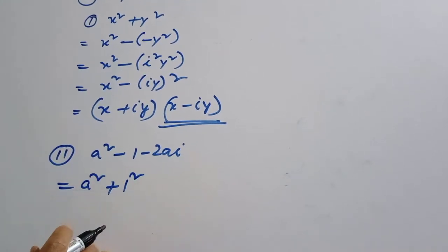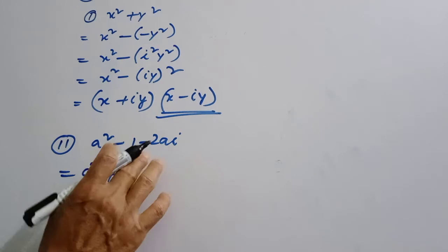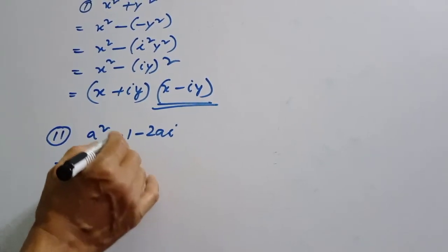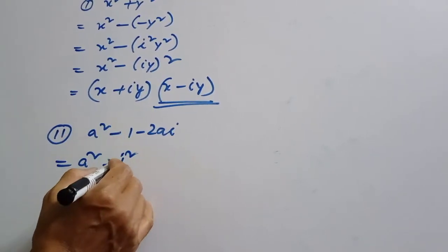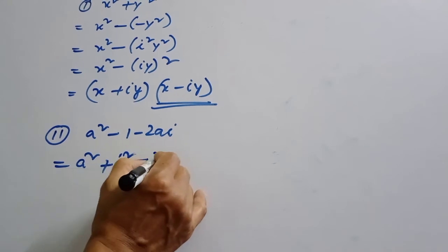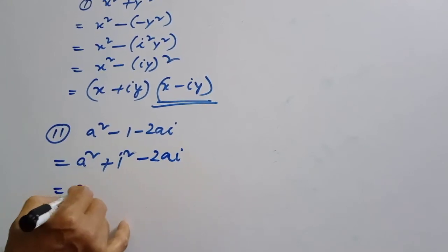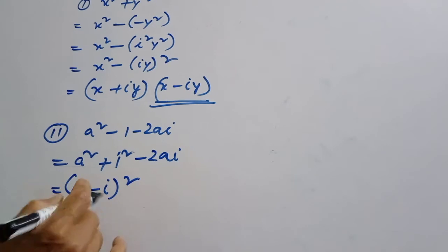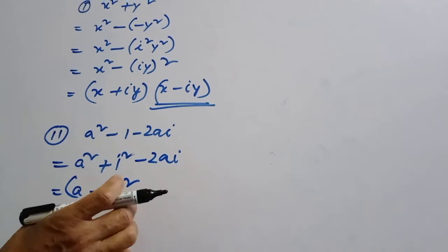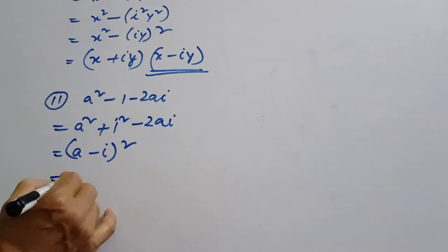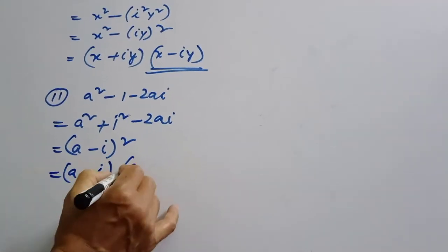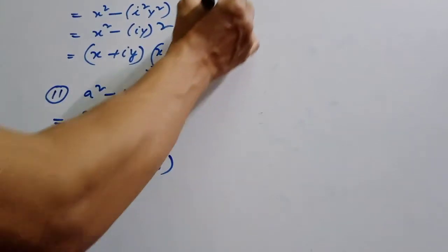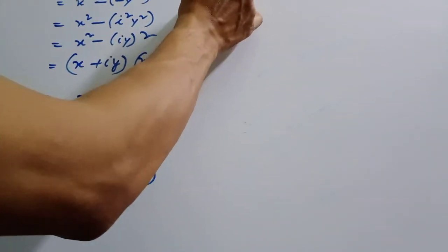1 squared — i squared — i squared is equal to minus 1 — plus a minus a minus 2ai. So (a minus i) whole square by identity: what is a minus i, or a minus i?